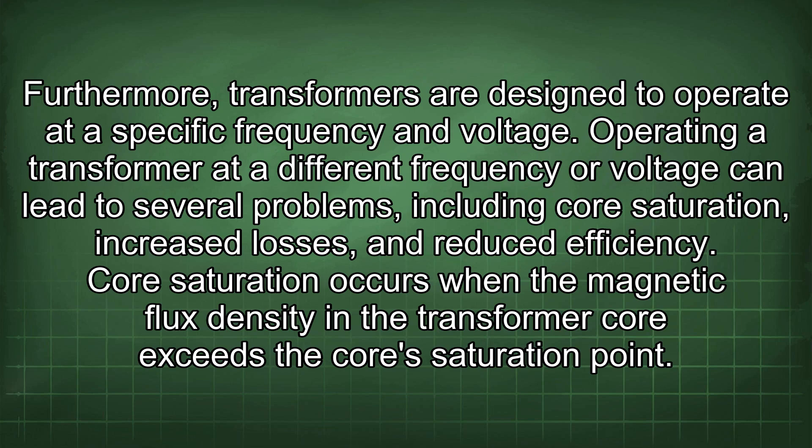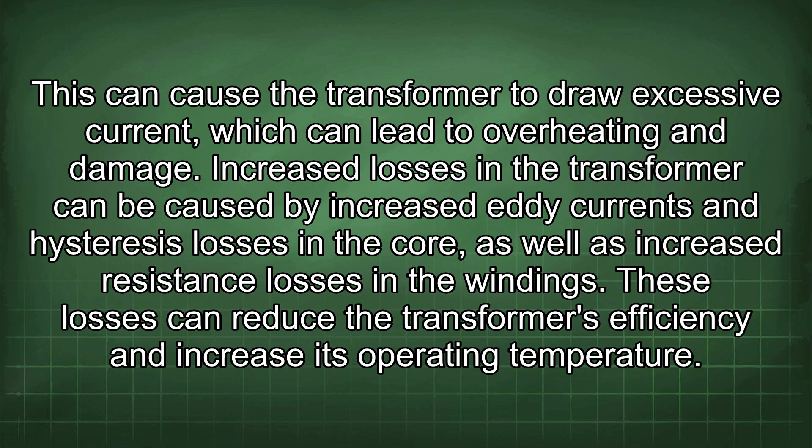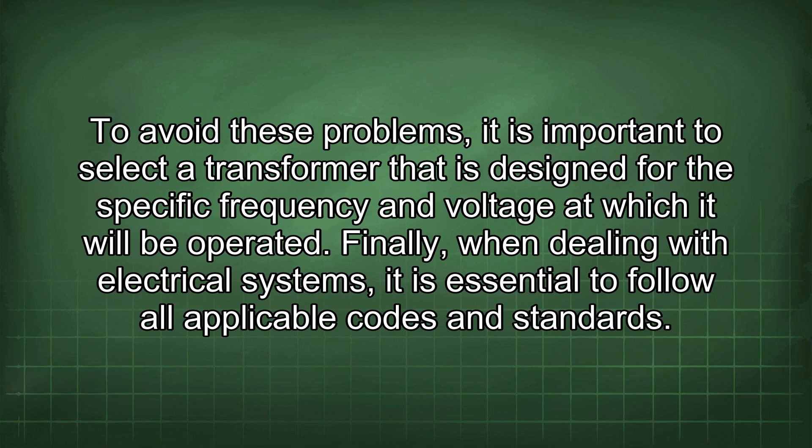Furthermore, transformers are designed to operate at a specific frequency and voltage. Operating a transformer at a different frequency or voltage can lead to several problems including core saturation, increased losses, and reduced efficiency. Core saturation occurs when the magnetic flux density in the transformer core exceeds the saturation point, causing the transformer to draw excessive current which can lead to overheating and damage. Increased eddy currents, hysteresis losses, and resistance losses in the windings can reduce efficiency and increase operating temperature. It is important to select a transformer designed for the specific frequency and voltage at which it will be operated.